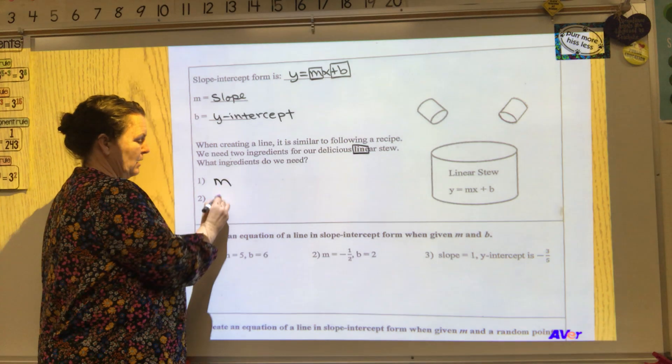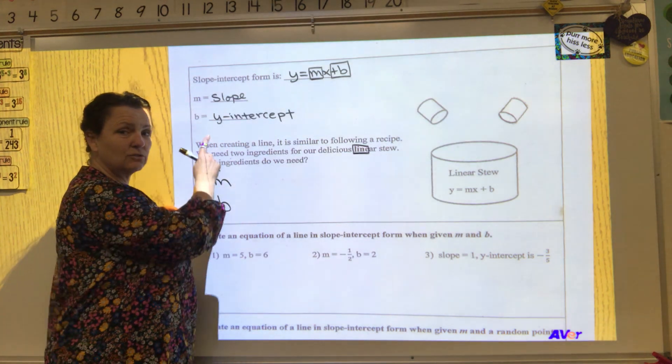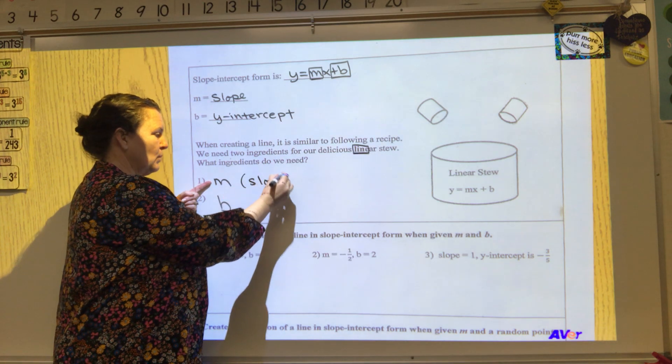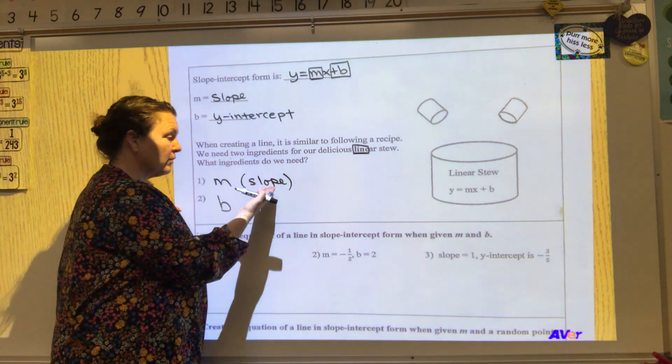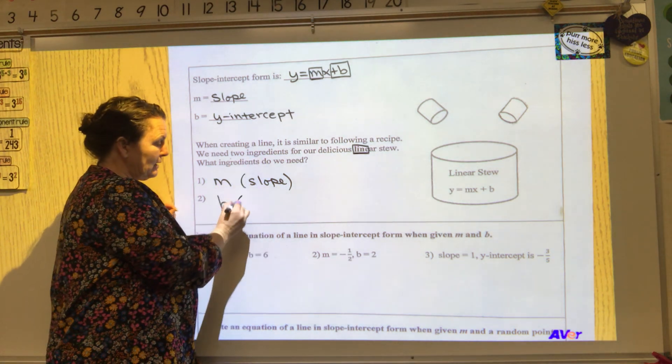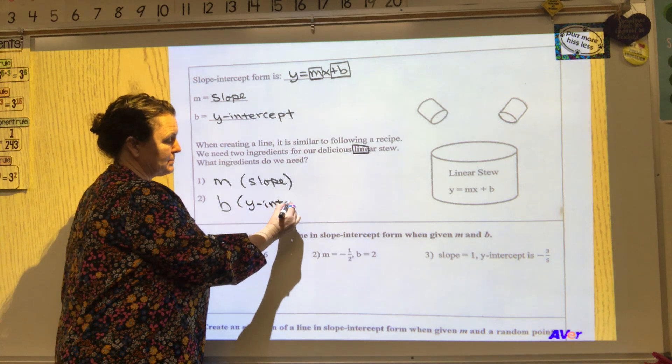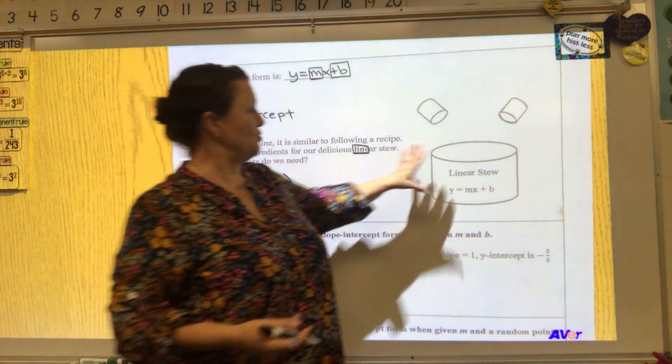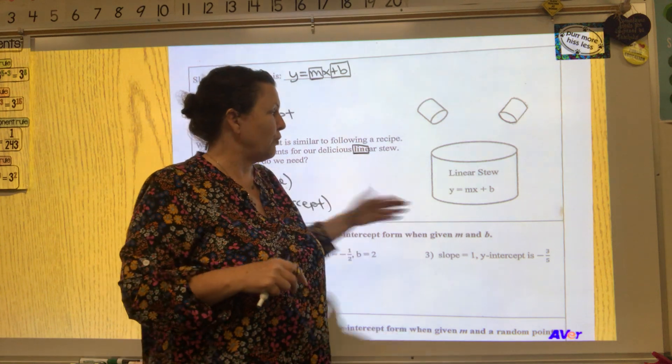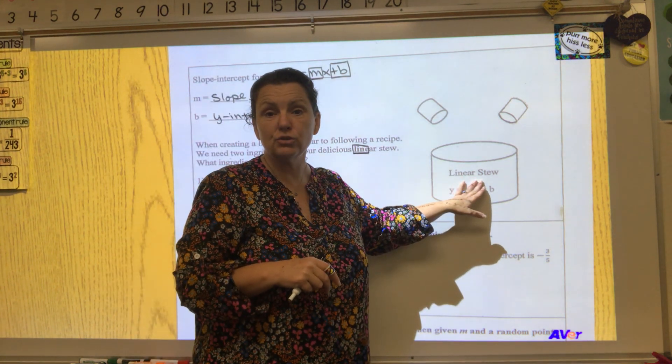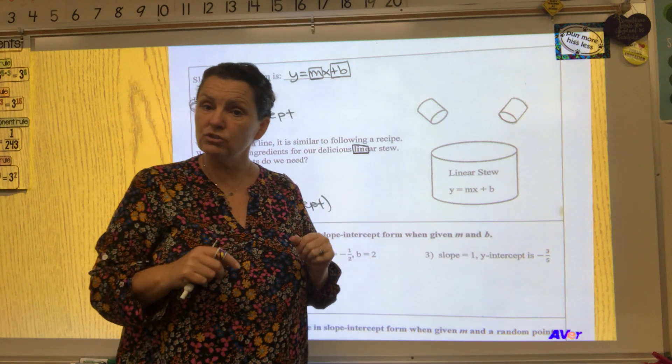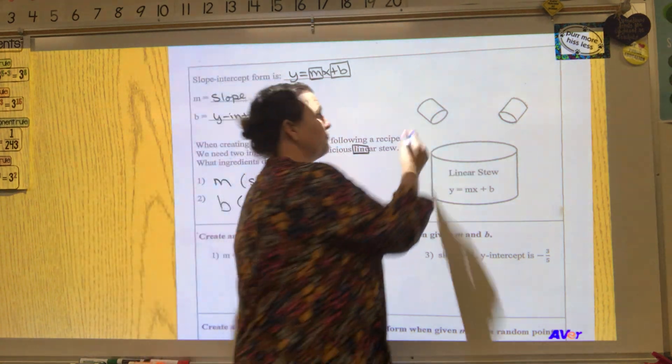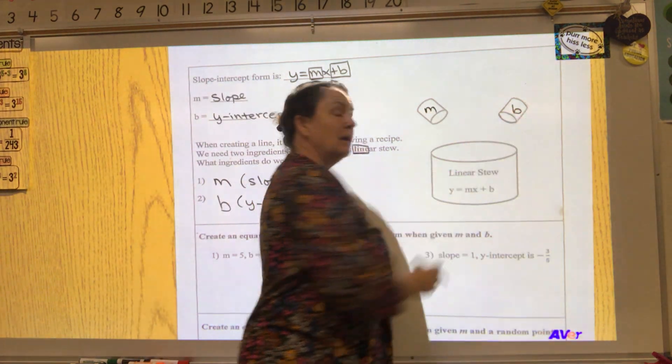So what ingredients do we need when making a line or linear stew? We're gonna need m and we're gonna need b. M is our slope - when we see m we know it stands for the slope ingredient. And when we see b we know it stands for the y-intercept ingredient. If you're a super visual learner like me, you get a big cooking pot out and you're gonna make a delicious linear stew. The recipe for this stew is y equals mx plus b. You go to the pantry and you're looking for one can of m and one can of b, because if you have those two ingredients you can form a line.